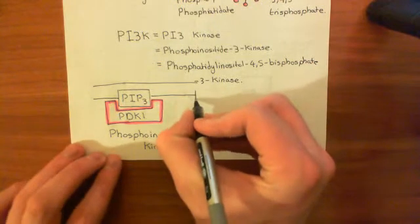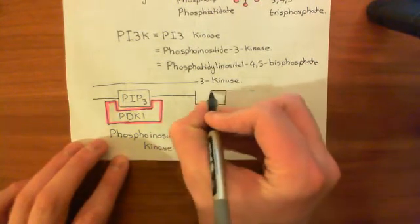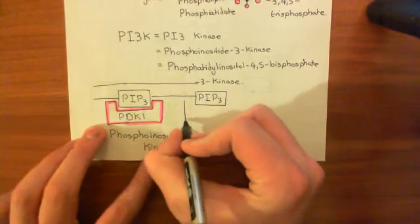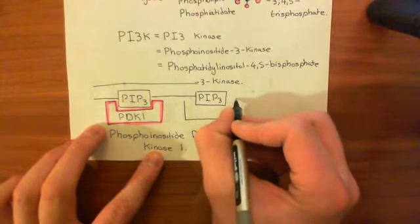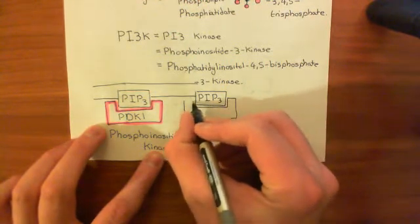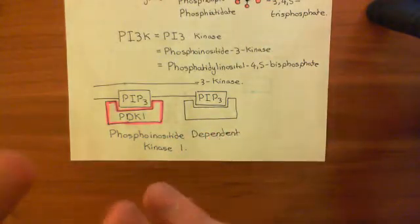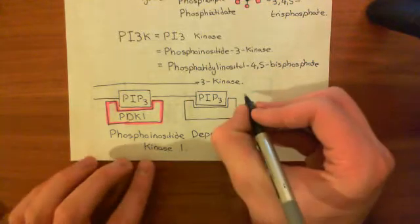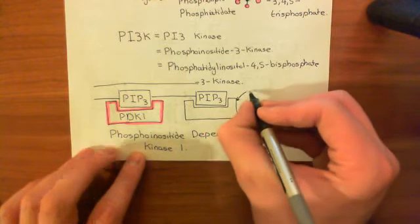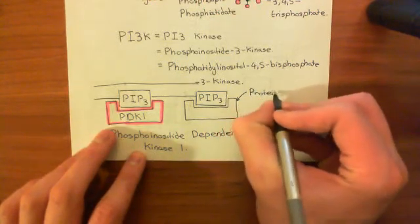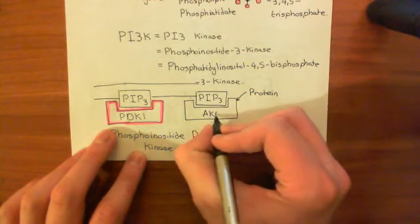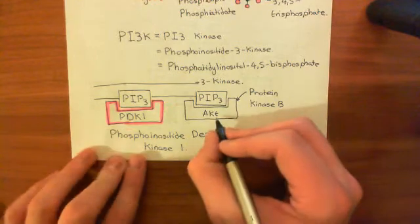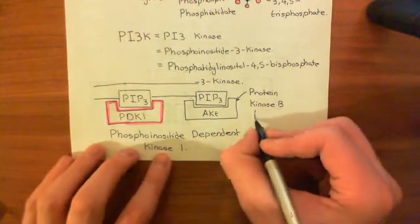Now another protein is going to localize at the phospholipid bilayer as well by binding to PIP-3 molecules again. And this other protein is a protein known as AKT, or more commonly maybe now referred to as protein kinase B. This is obviously now an important enzyme, because we know protein kinase A, we know protein kinase C, we know protein kinase G, these are all very high up in signaling pathways. So this is protein kinase B, so it must be pretty important. But its old name was AKT, and that name is still quite pervasive.